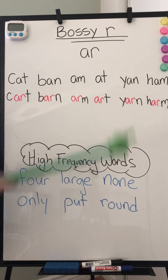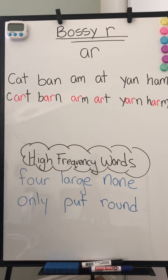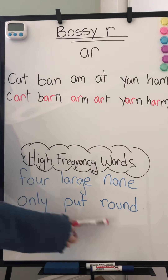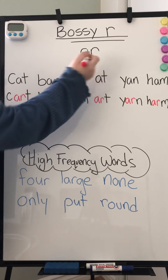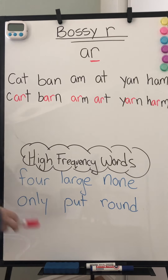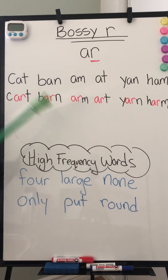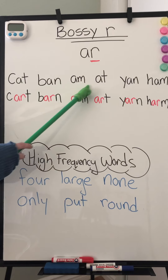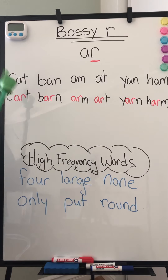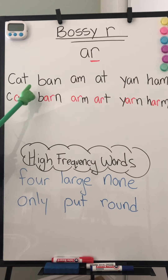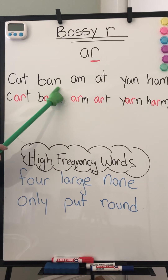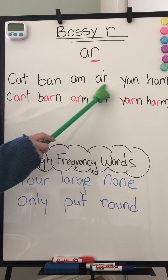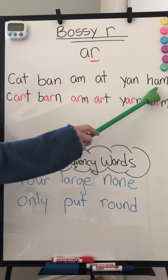when the R is paired with the A, we don't hear the A. It just sounds like R. R says, I'm the boss, I'm going to make the sound. A, you're going to sit there quietly. So for example, I'm going to show you some words. Without the bossy R, A sounds like 'ah' — like cat, ban, am, at, yan, ham.